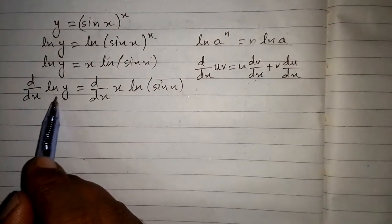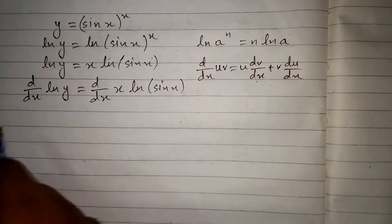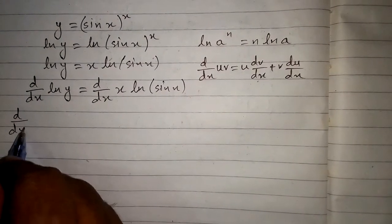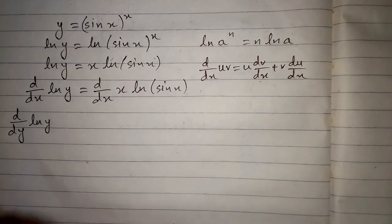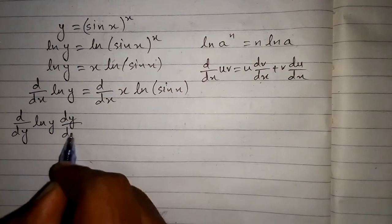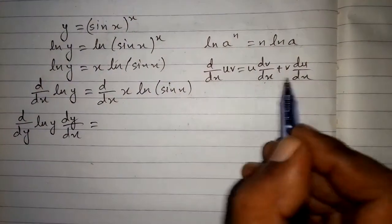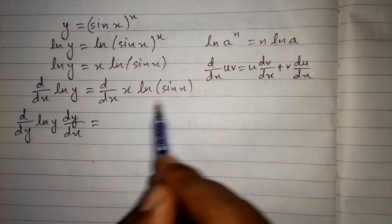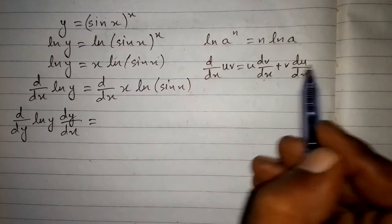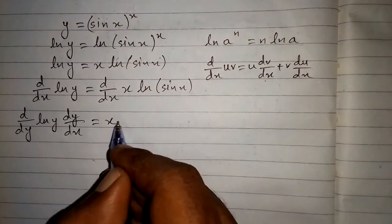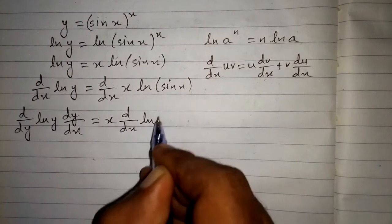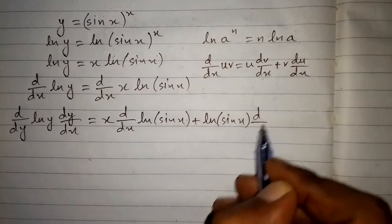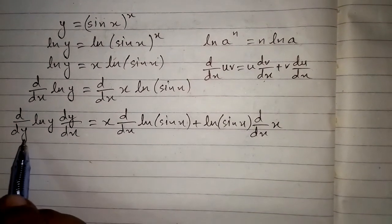To differentiate ln y with respect to x we apply the chain rule, since we cannot directly differentiate ln y with respect to x. We write d by dy of ln y, multiplied by dy by dx. For the product rule, u is x and v is ln of sin x. So we write x times the derivative of ln of sin x, plus ln of sin x times d by dx of x.